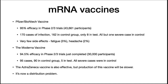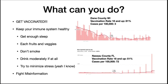How willing is the world to be vaccinated? The vaccine is now readily available in the United States, yet a significant percentage of individuals are unwilling to be vaccinated. If we get vaccinated, we can put COVID-19 behind us. A great illustration is to compare Dane County, Wisconsin — with a vaccination rate of 81% — and Nassau County, Florida — with a vaccination rate of 51%.